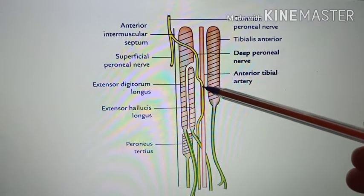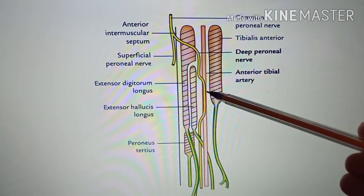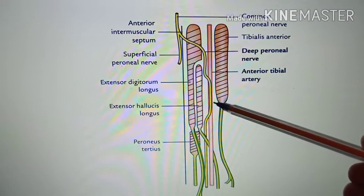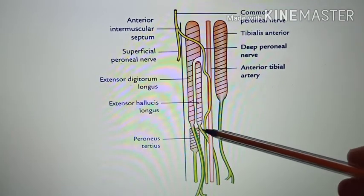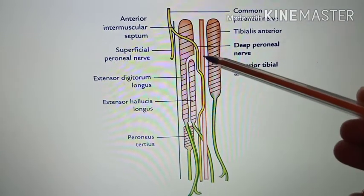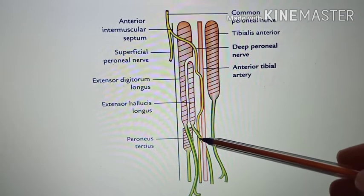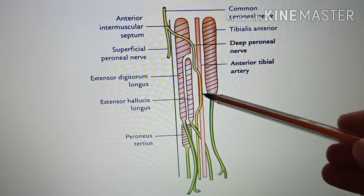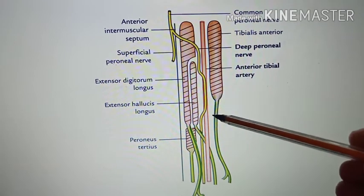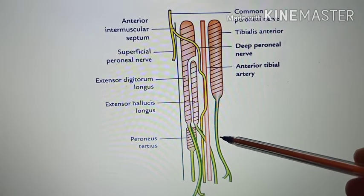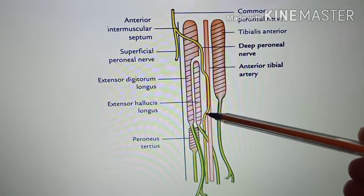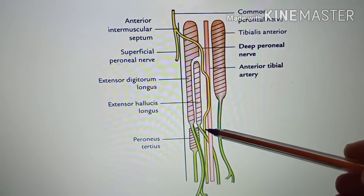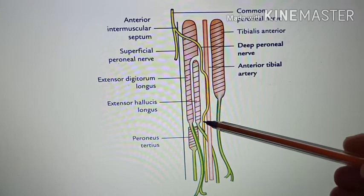In the middle one-third of the leg, the nerve hesitates to cross the artery from lateral to medial side, lying anterior to the artery, then goes back to the lateral side. Because of this behavior, the deep peroneal nerve is also referred to as nervus hesitans.